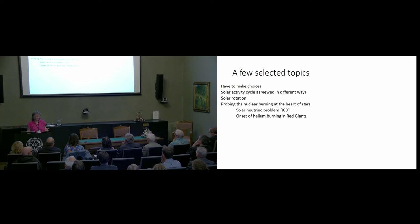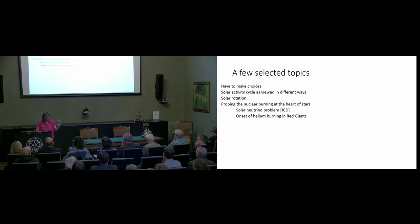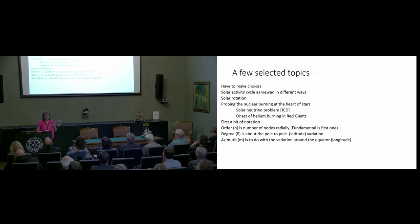I'm going to talk about the solar activity cycle, because that really interests me, and about solar rotation — solar rotation in the context of the solar cycle. And then I'll move on to probing the nuclear burning at the hearts of stars. I'll concentrate on the onset of helium burning in red giants. First, I want to give you a tiny bit of notation. You hear talk about the order — that's N, the number of nodes as you move radially. The fundamental is the first one.